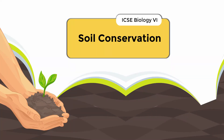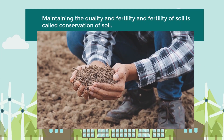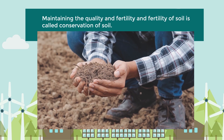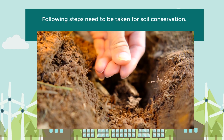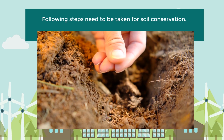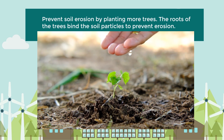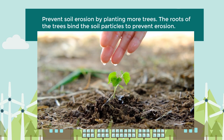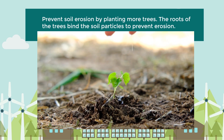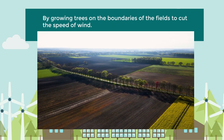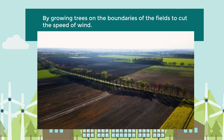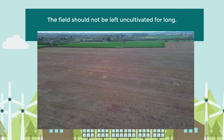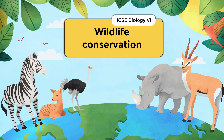Soil conservation. Maintaining the quality and fertility of soil is called conservation of soil. The following steps need to be taken: prevent soil erosion by planting more trees, as the roots of the trees bind the soil particles to prevent erosion; growing trees on the boundaries of fields to cut the speed of wind; and the field should not be left uncultivated for long.